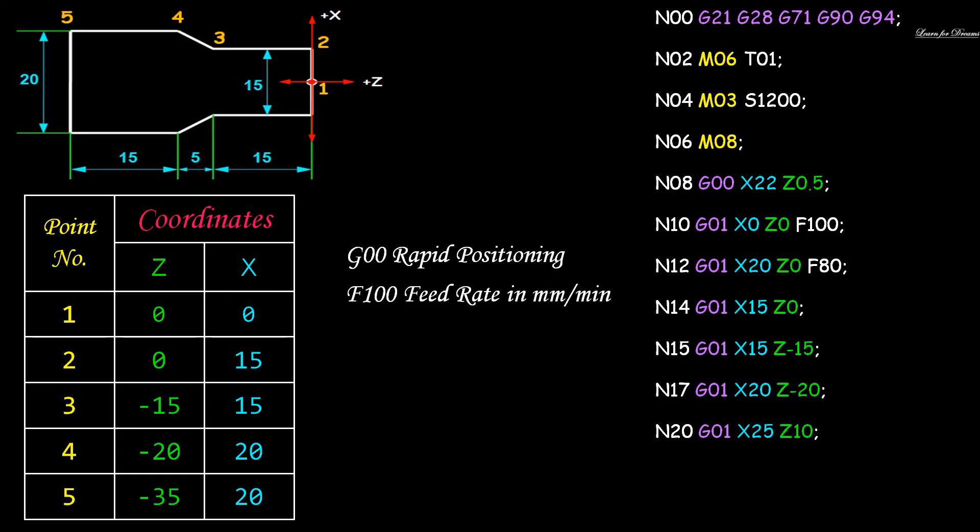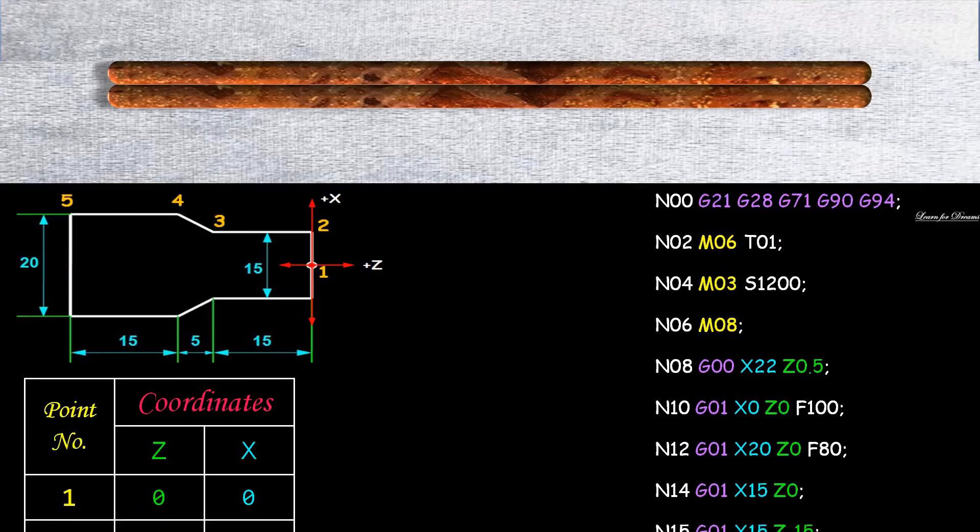So we will take the tool away from the workpiece. N20 G01 X25 Z10. Then humne jo coolant on kiya hai wo off kardenge. We will end the program tape by using M30. Now this is how your entire program will look like.